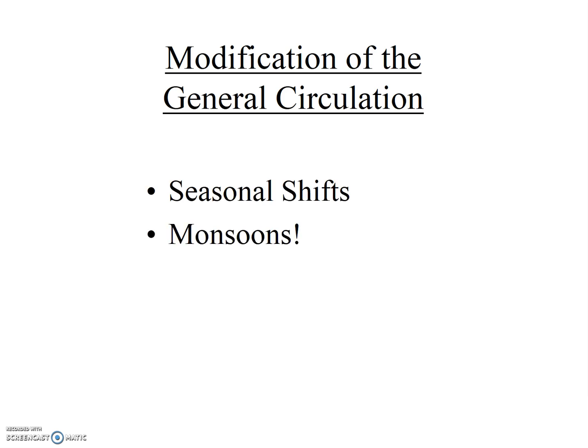In the last video clip we discussed the general global atmospheric circulation pattern. There are two important modifications to the general pattern that we need to now review: first, the seasonal shift of the pressure and wind zones, and second, monsoons.